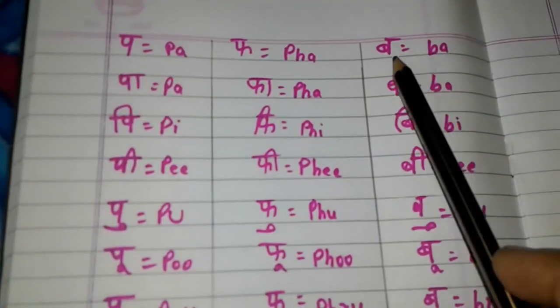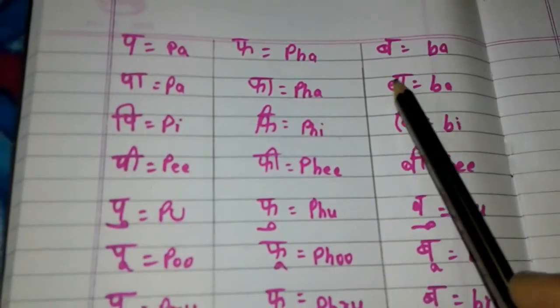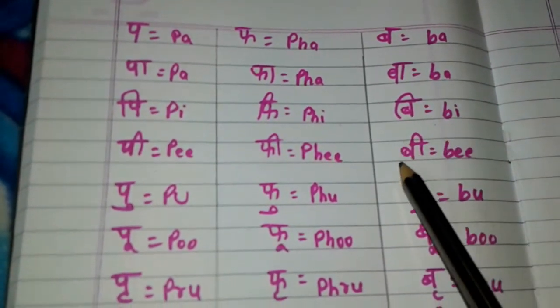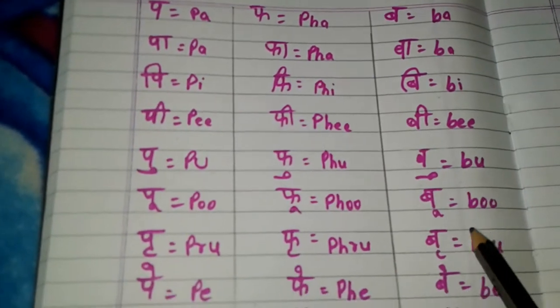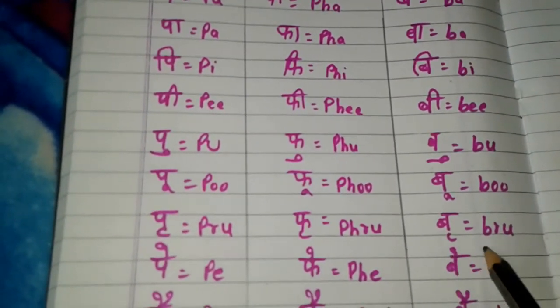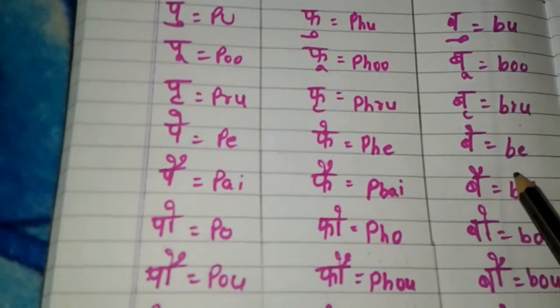Ba, B-A. Ba, B-A. Bi, B-I. Bee, B-E-E. Bu, B-U. Bu, B-O-O. Bru, B-R-U.